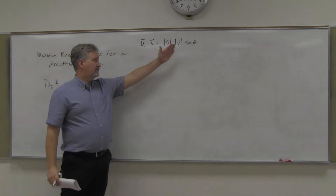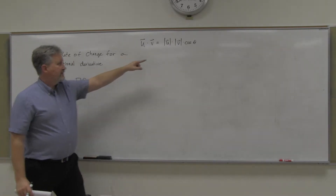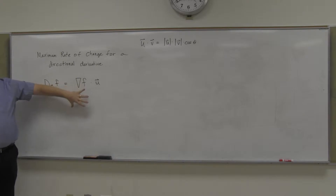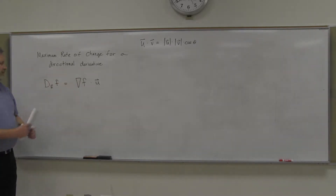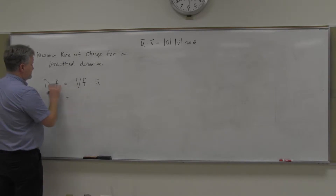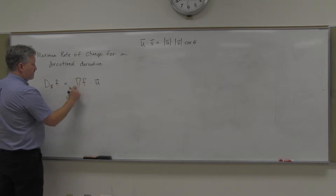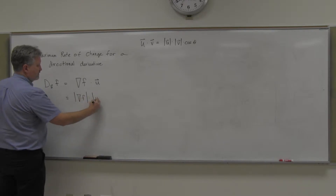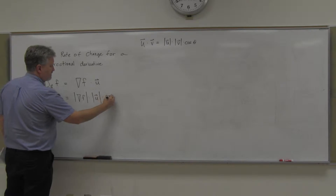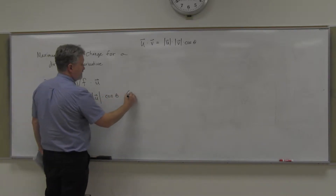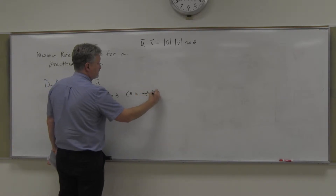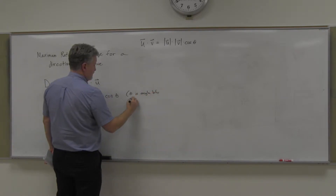So this magnitude times magnitude times cosine of theta, where theta is the angle between u and v. We can do the same thing here. Since we've got the dot product of two vectors, this directional derivative would also equal the magnitude of the gradient vector times the magnitude of the unit vector times cosine of theta, where theta is the angle between the gradient vector and the unit vector.